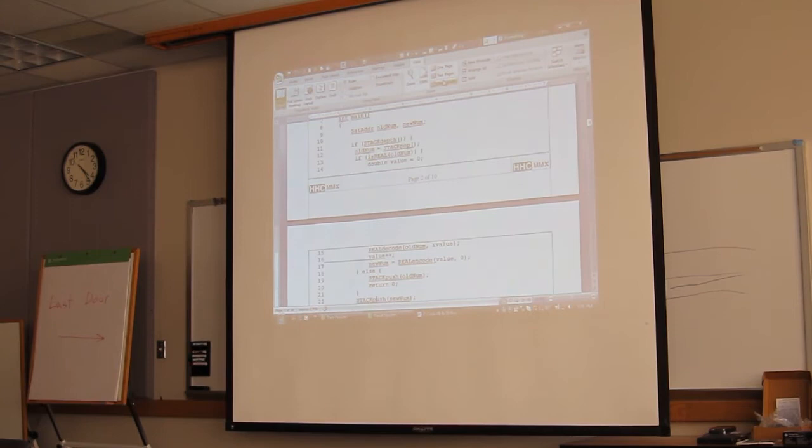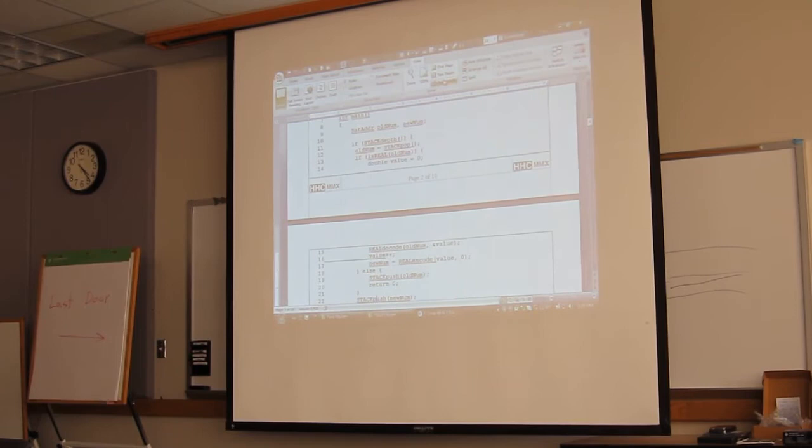The else is there in case what you popped off the stack at line 13 was not a real number, then I'm just going to push it right back on. So if something else was on the stack, it'll leave the stack unchanged. And finally, at line 22, I'm going to push the new number back on. And the reason it's a little, the order of the logic there is a little bit funny because you'll see in the next example. Are there any questions so far?